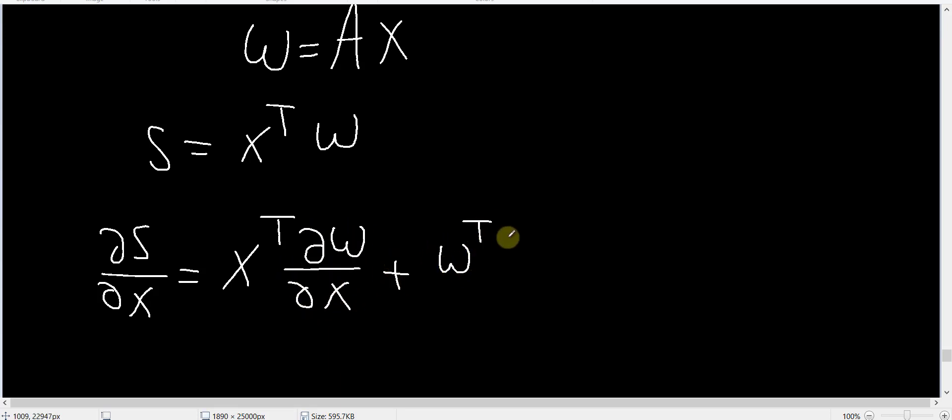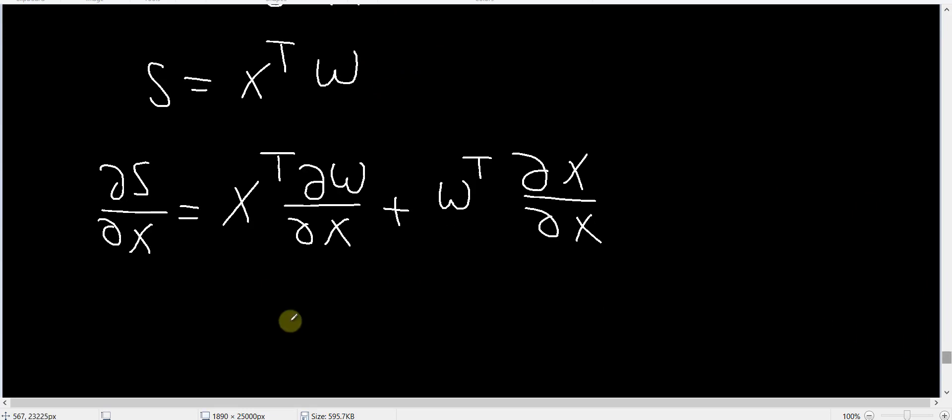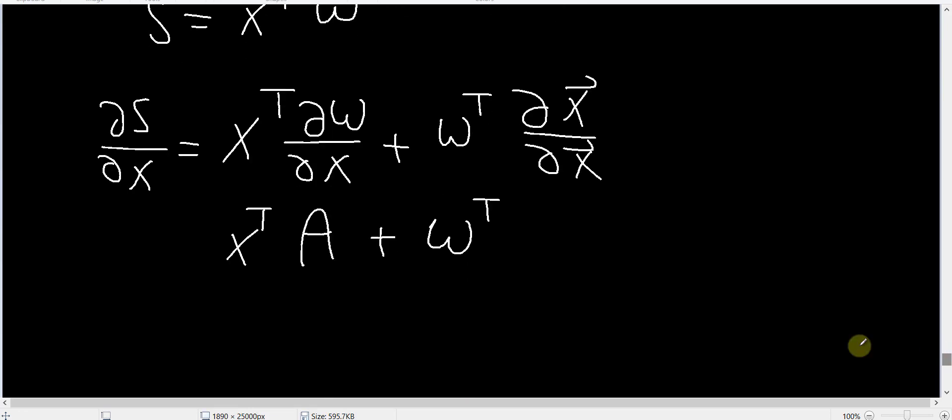Now we know that W is equal to AX, and then partial W by partial X as we have proven before is equal to A. So this is equal to X transpose multiplied by A. Here I have W transpose multiplied by partial X by partial X, but partial X by partial X is again equal to the identity matrix, and so this is equal to W transpose.